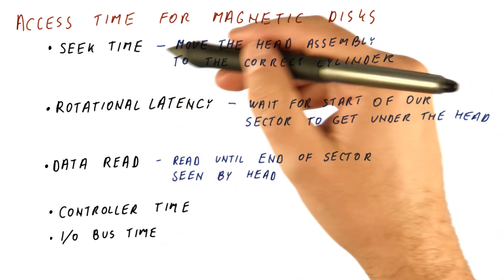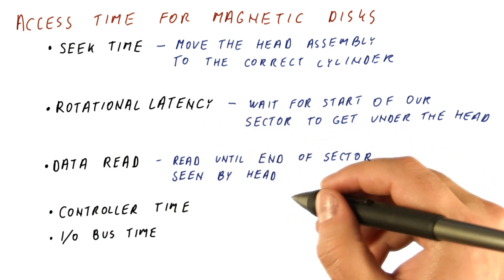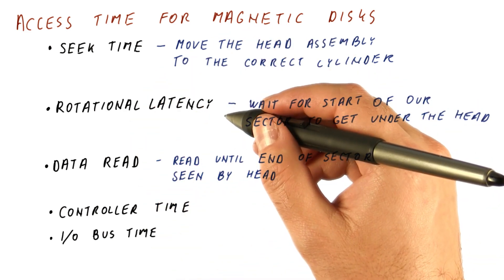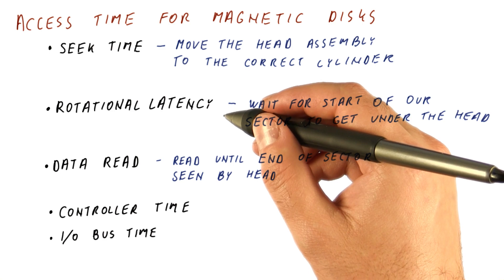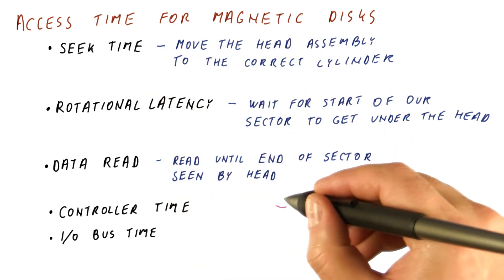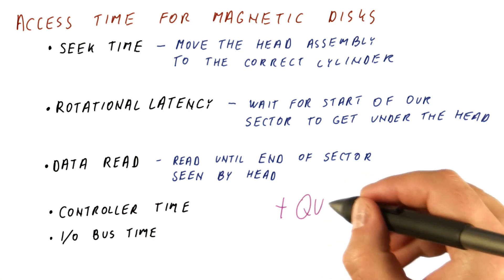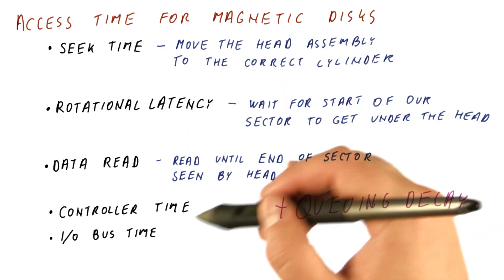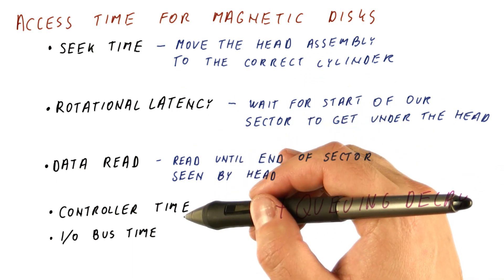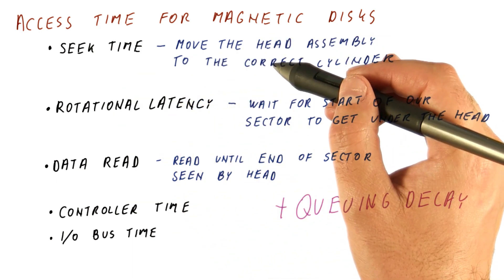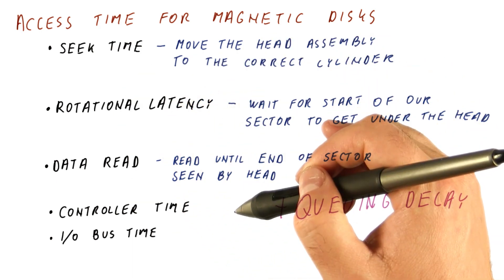All of this is the latency to do one disk access. Oftentimes, the latency of a disk request made by the operating system includes this, plus a significant queuing delay — because we first have to wait for previous accesses to finish, and only then can our access move the heads to the correct position and do a read or a write.